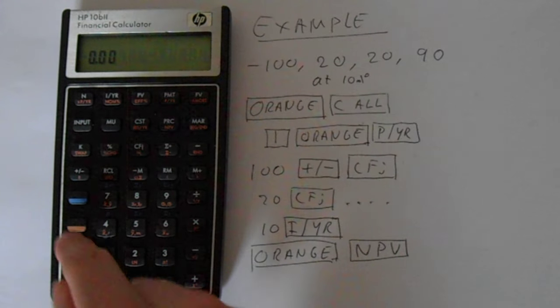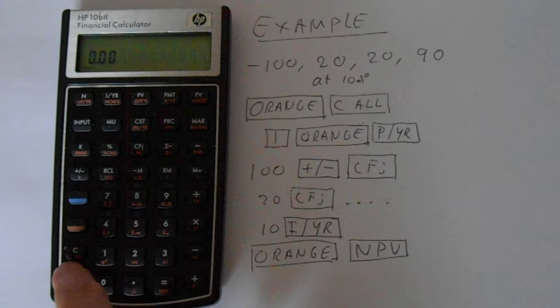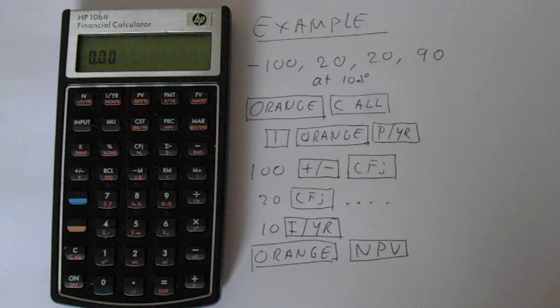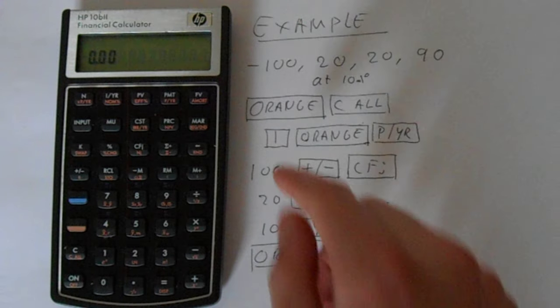First step, we have to ensure that the calculator's memories are clear. Press orange and then the button immediately underneath it, See All, that clears everything. It flashes up that we've got 12 payments per year. That's not correct because we're getting one payment per year, so we have to change that to one.